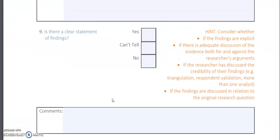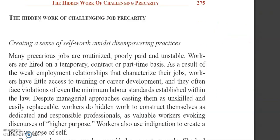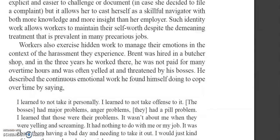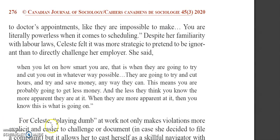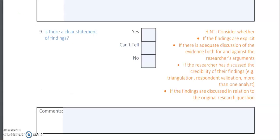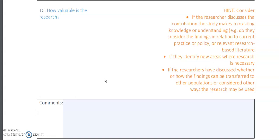Checklist item nine: is there a clear statement of findings? Yes — because it uses narrative analysis, findings are reported through direct quotations. You can see how participants' words are quoted directly; for example, one participant's statement about playing dumb at work is cited verbatim. Everything was duly reported. Use the checklist hints as your guide to locate the answers within the paper so you don't miss valuable points.